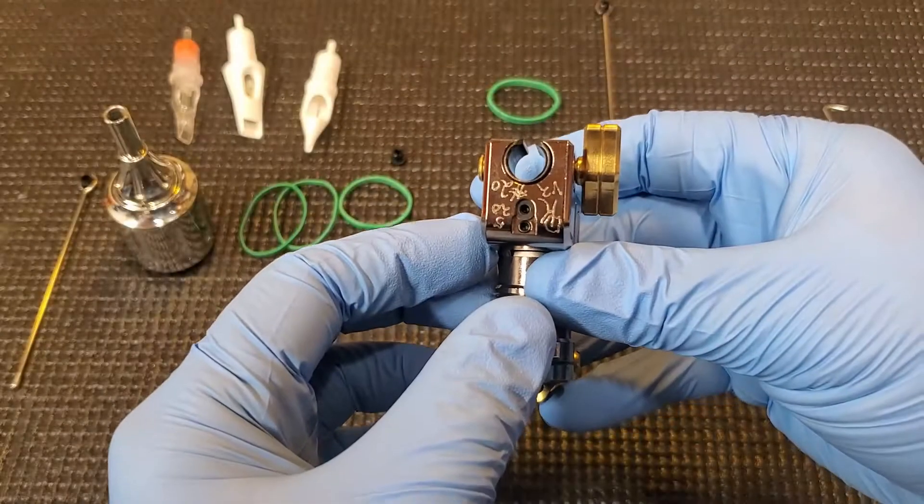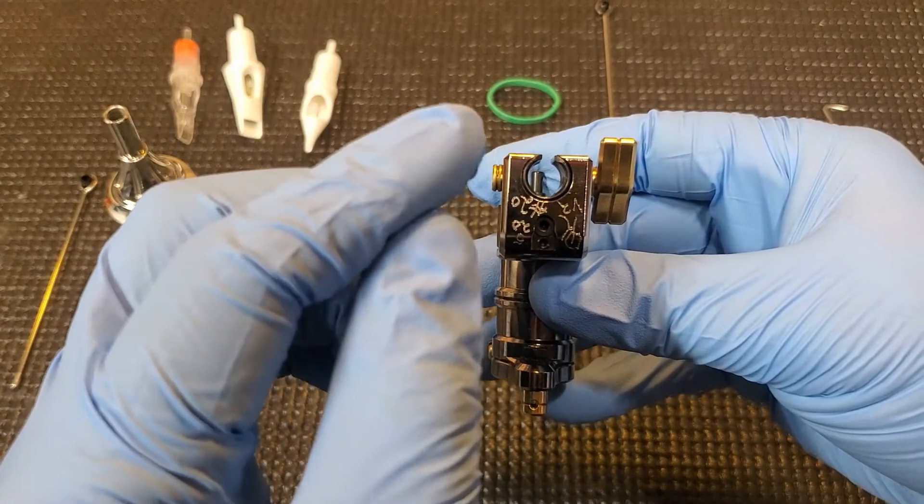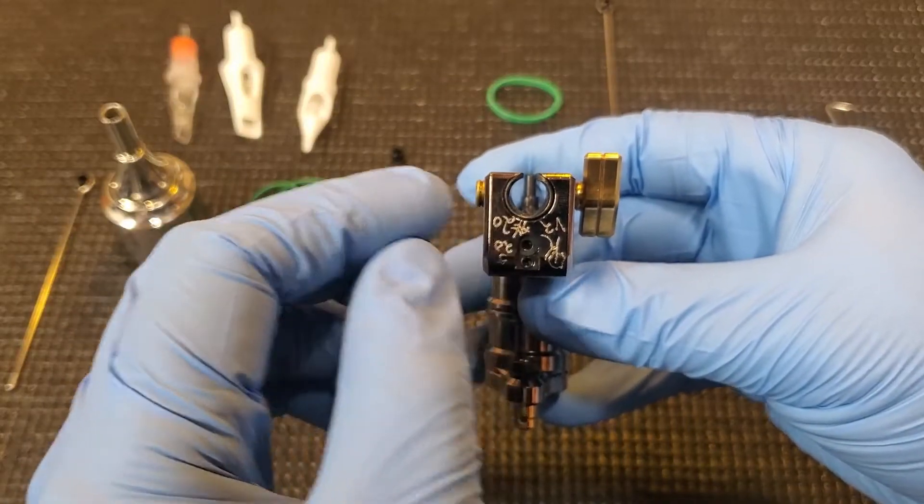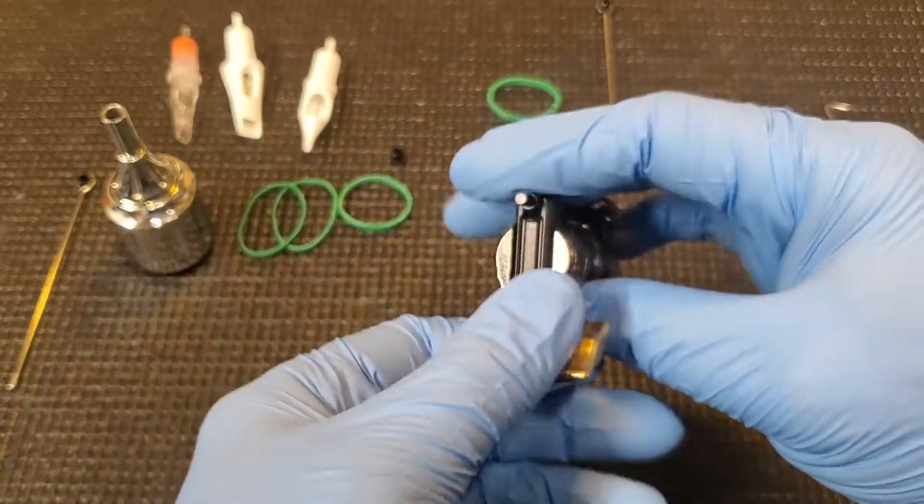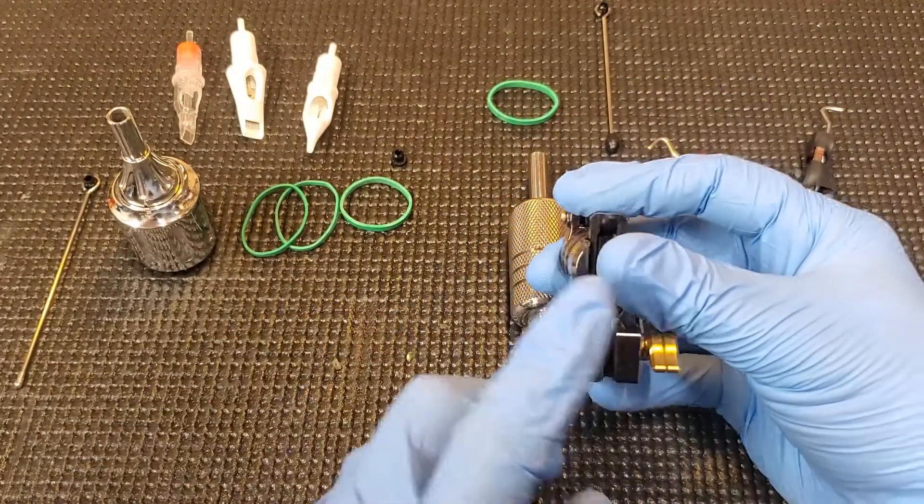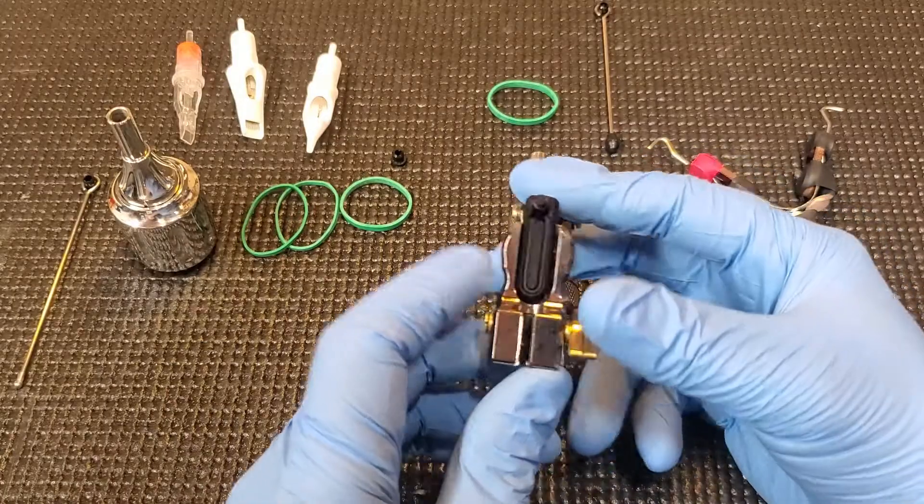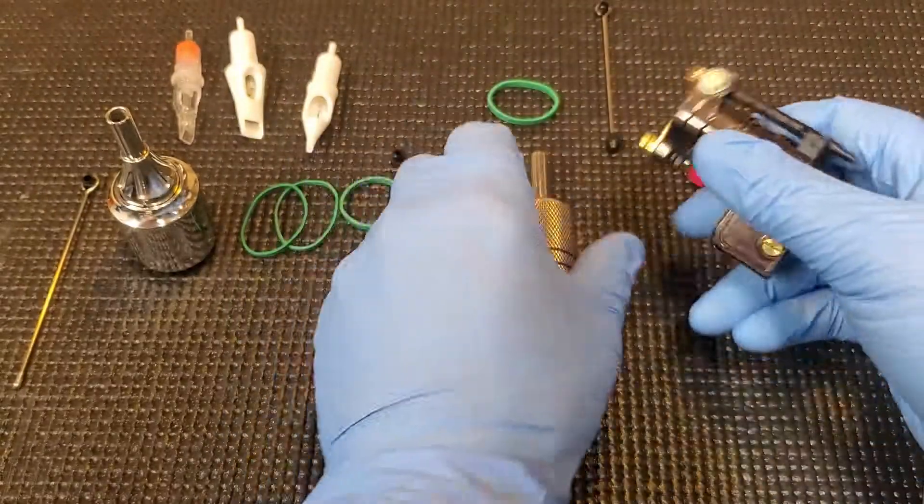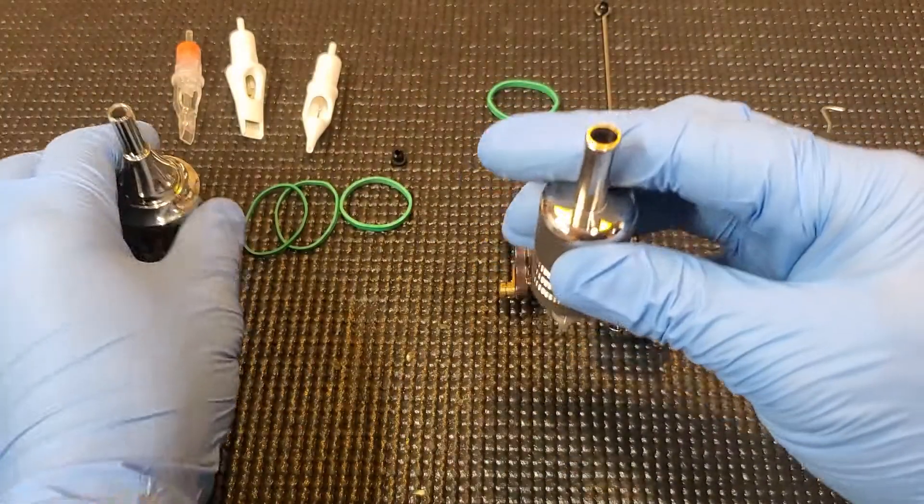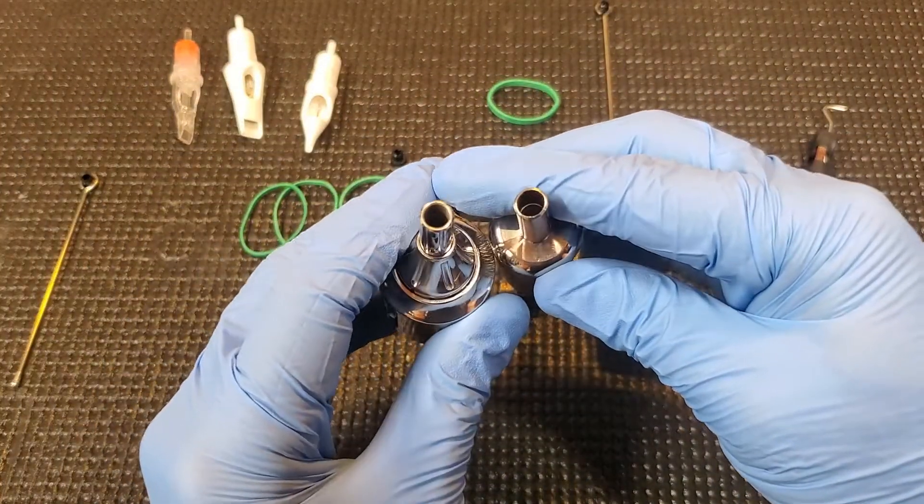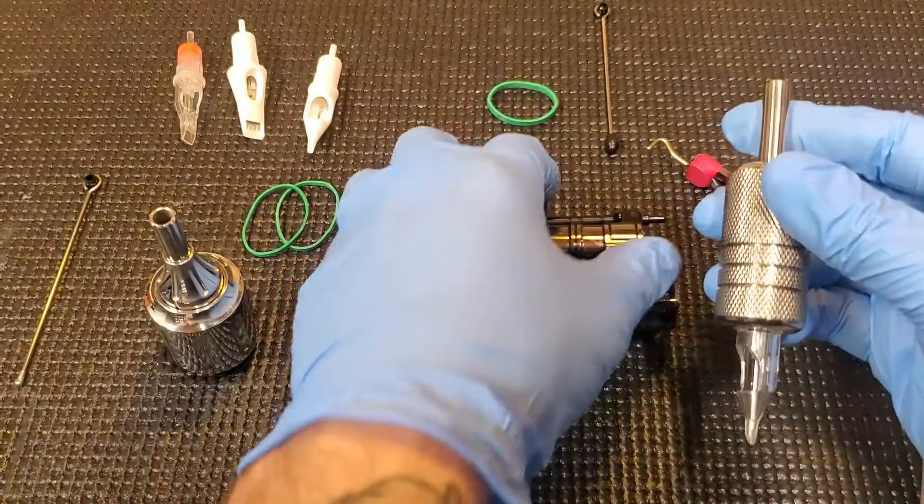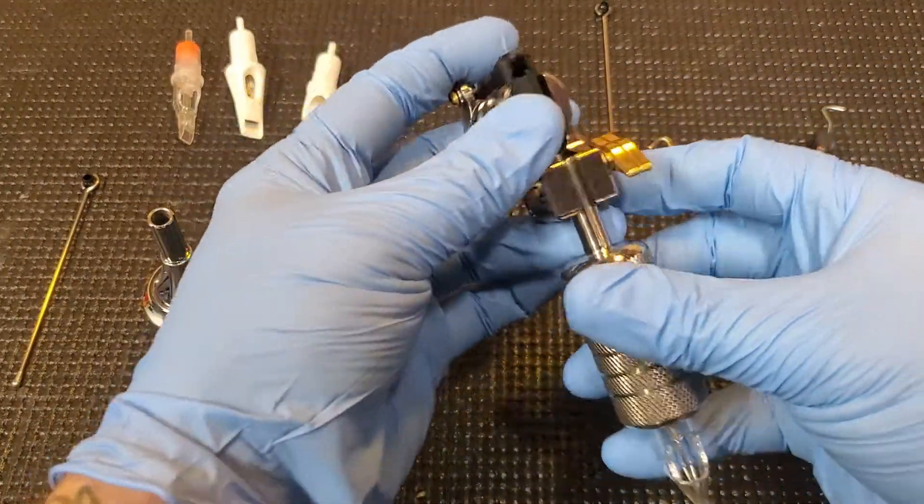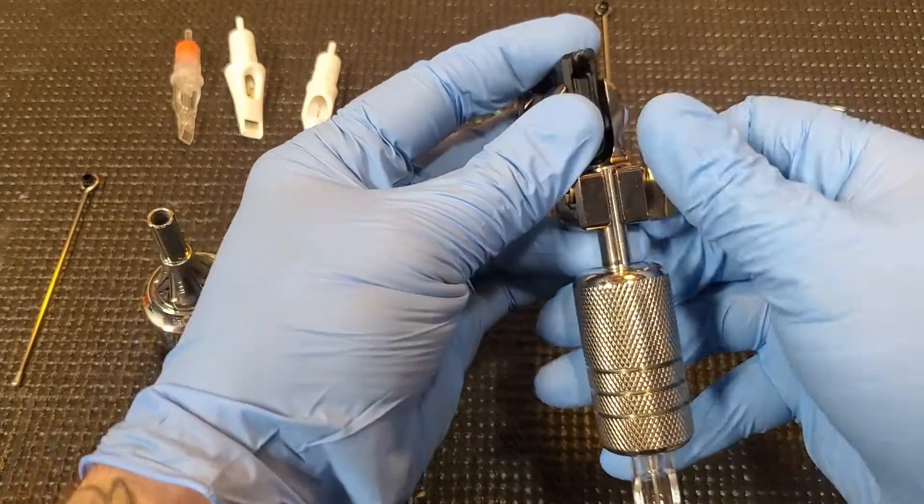I will note if you use disposable cartridge grips or thinner back stems, this might potentially crush those back stems. I use both of these and I feel like they are substantial enough to not cause any warping or issues when you tighten down on that back stem.